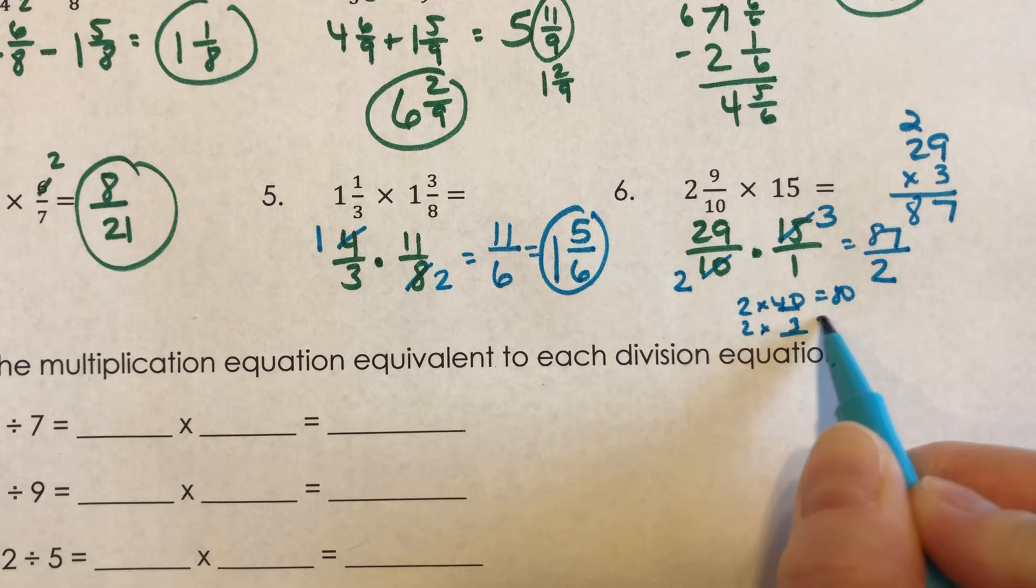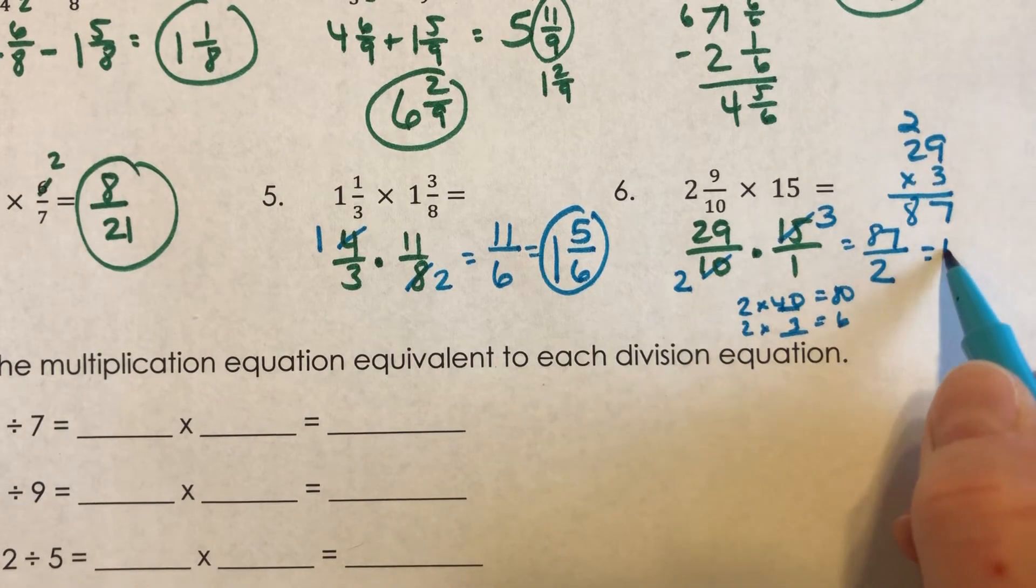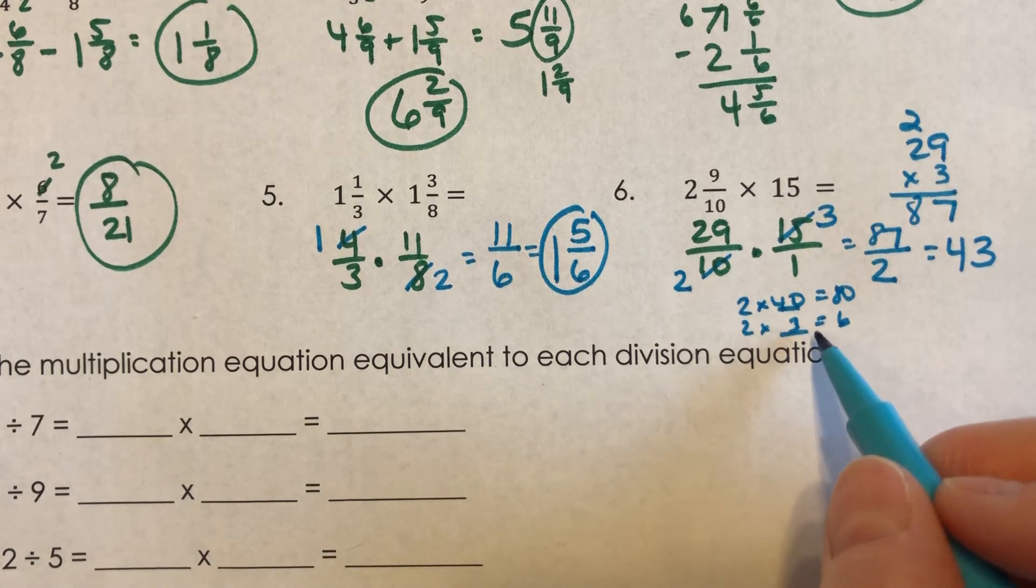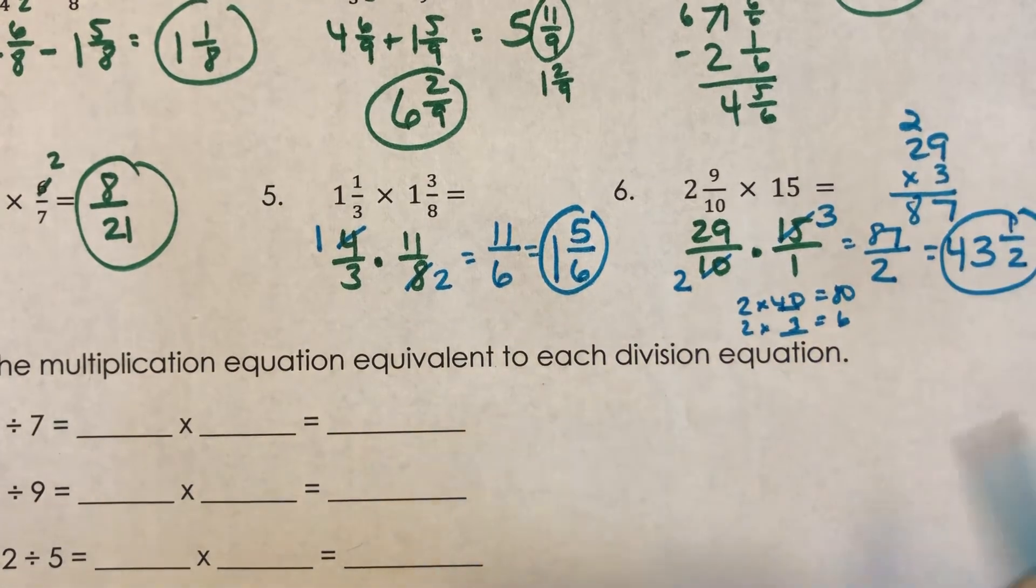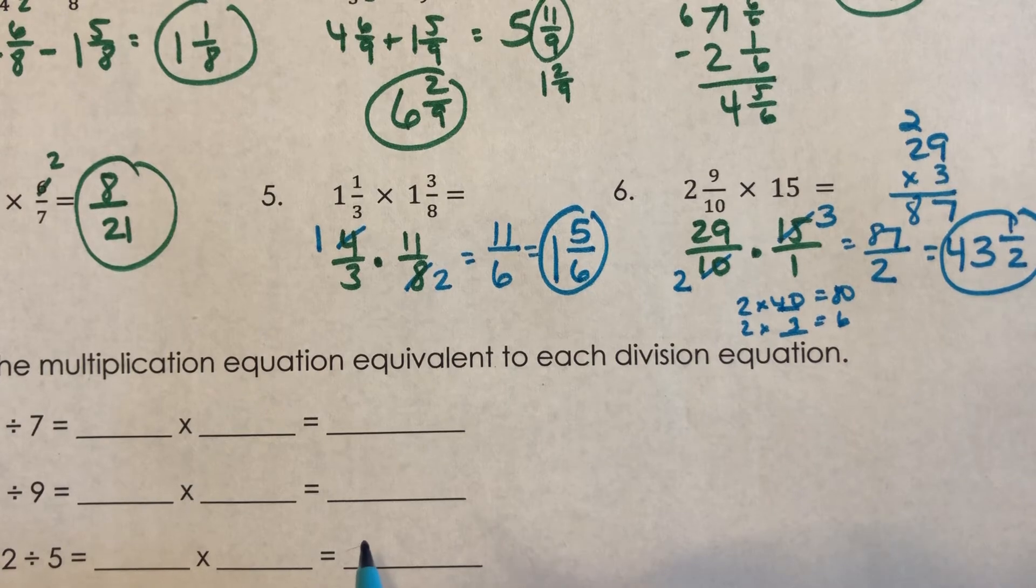So if you have forty twos, you have eighty. And I'm trying to get to eighty-seven, right? Well, I know that two times three is six. And that would get me at eighty-six. So I can fit forty-three twos in there. And then I have, if I have eighty-six, it's one more to get to eighty-seven. So I'd have forty-three and a half. Forty-three and a half.